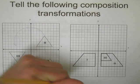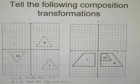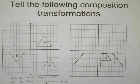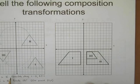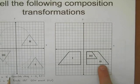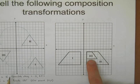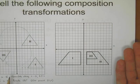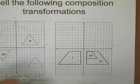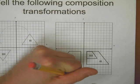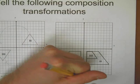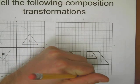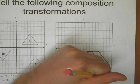For the next example, to get from one to two, the size didn't change — it looks like the shape was folded over. The word for that is reflection. So from one to two we reflected across the y-axis.